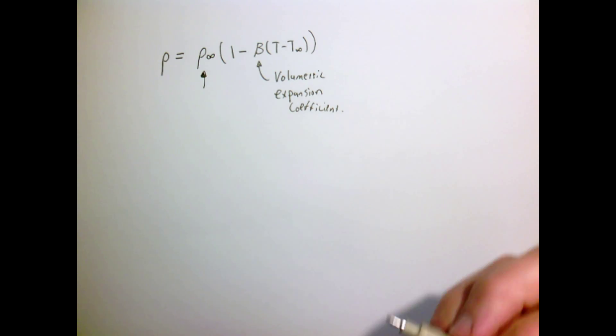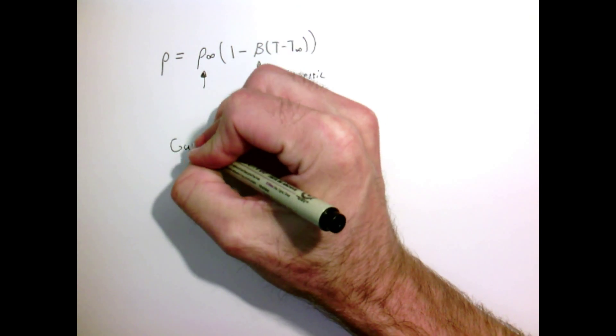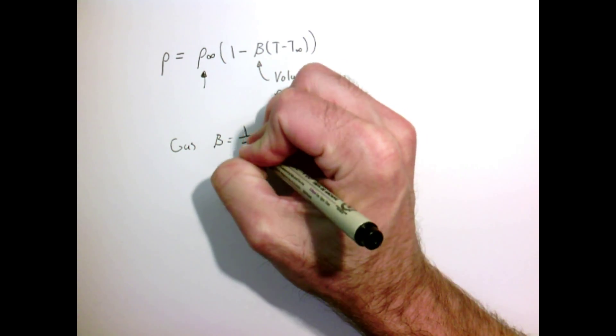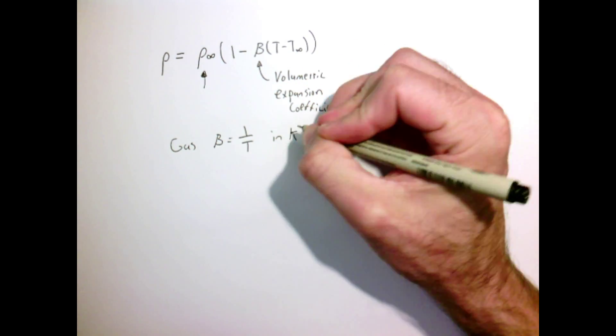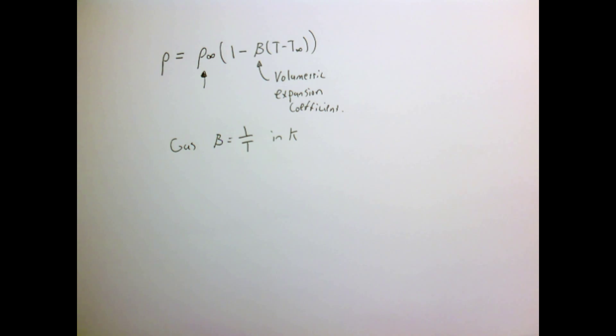It turns out that for a gas, this volumetric expansion coefficient is simply one over the temperature, where the temperature would have to be measured in Kelvin. For a liquid or a fluid such as water, we would simply look this value up in a book.